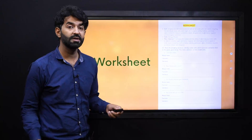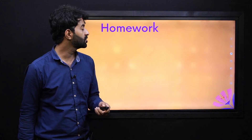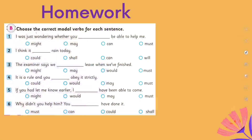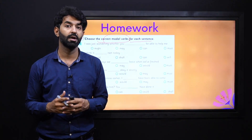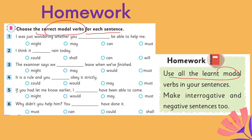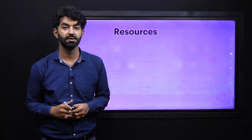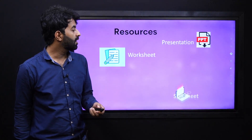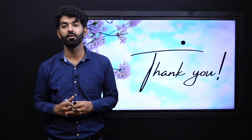After the classroom activity, you can get your worksheet and solve it to put your learned concepts into practice. For your homework, you have to choose the correct modal verbs for each sentence from the multiple answers given, placing the correct modal verb in the sentence. Another homework task asks you to use all the learned modal verbs to make interrogative and negative sentences, addressing affirmative, negative, and interrogative forms. All resources mentioned are in your video description — you can access them easily to learn more about modal verbs and their functions.